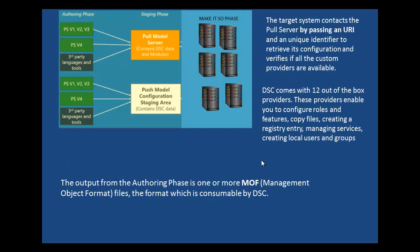Let's look at the example on screen. We have the authoring stage, the staging phase, and the make-it-so phase. The authoring phase is where you actually create the DSC file. The DSC file is a set of DSC cmdlets that make up the script. The output from that script is referred to as MOF — Management Object Format File — and this is the format which DSC uses.